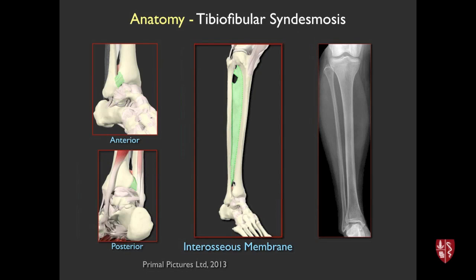Injuries about the ankle may be associated with the ring concept, where an injury distally may ascend and disrupt the interosseous membrane and potentially exit through the fibula. This is why it's not uncommon to see tibiofibular radiographs done at the same time as ankle films. In practice, orthopedists typically palpate more proximally along the tibiofibular region, and if it's non-tender, you usually don't need radiographs more proximally.